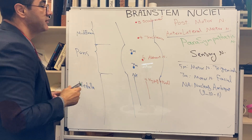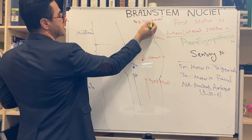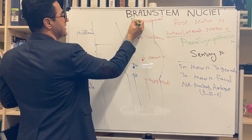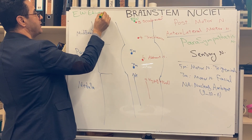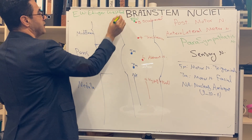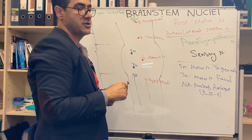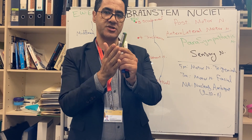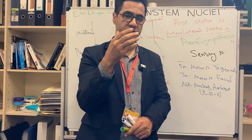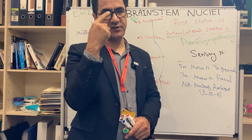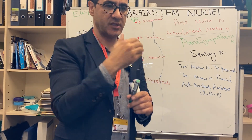Now, parasympathetic nuclei. We have four parasympathetic nuclei. One of them is at the top, just next to the oculomotor nucleus. It is known as the Edinger-Westphal. Edinger-Westphal is parasympathetic 3. The nerve coming out of Edinger-Westphal joins the oculomotor nerve. They travel alongside each other, and the Edinger-Westphal nerve fibers supply the ciliary muscles for accommodation and near vision.